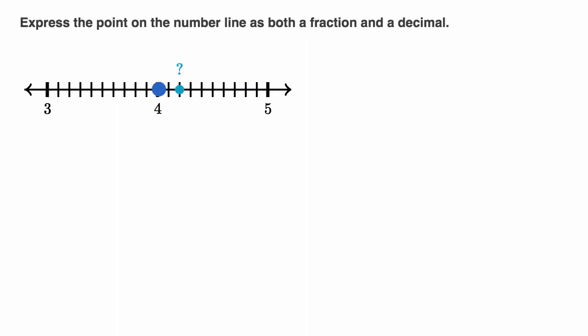And the space between four and five is divided into one, two, three, four, five, six, seven, eight, nine, ten equal sections. So each of these hash marks represent an extra tenth.